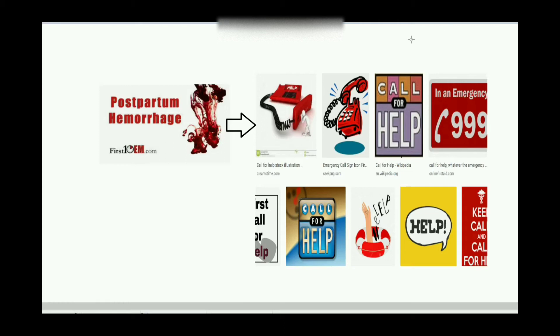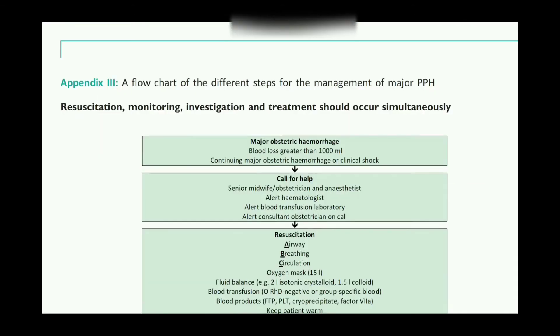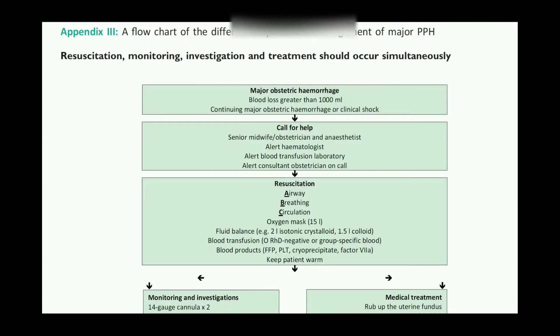Call for help may be via telephone or by asking colleagues nearby. By any means, we have to ask for help — this is the first step in the management of any obstetric emergency. Senior midwife, obstetrician, and anesthetist should be called, along with the hematologist, blood transfusion laboratory, and consultant obstetrician on call. There is a multi-disciplinary team approach.